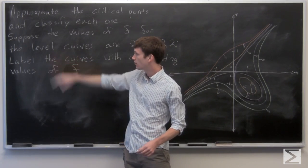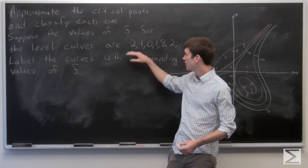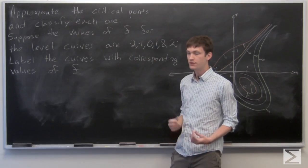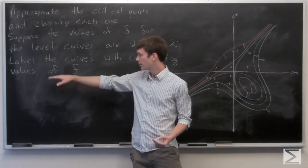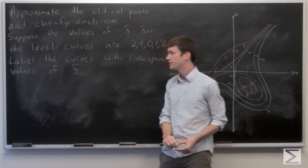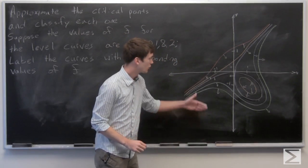We're asked to suppose that the values of f for the level curves are negative 2, negative 1, 0, 1, and 2. And assuming that,